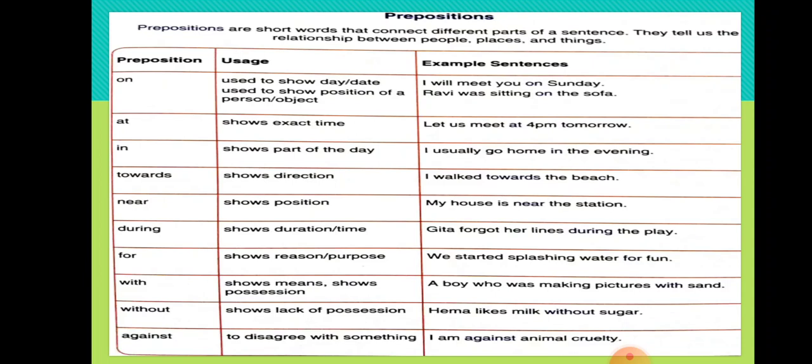Under the Grammar part, we are learning Prepositions. Prepositions are short words that connect different parts of a sentence. They tell us the relationship between people, places, and things. The prepositions we had covered are: On, At, In, Towards, Near, During, For, With, Without, Against. 'On' is used to show any date or time, and used to show the position of a person or object. 'At' shows exact time — for example, 'We shall meet at 4 pm tomorrow.'